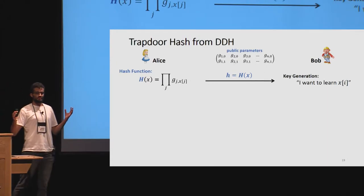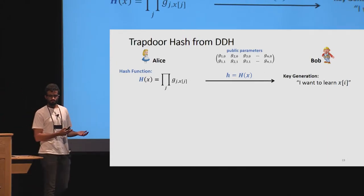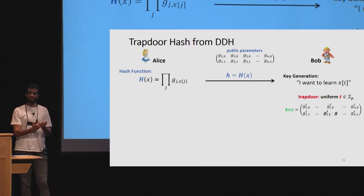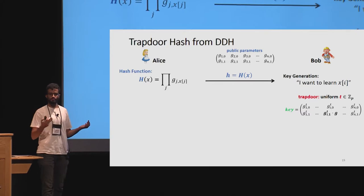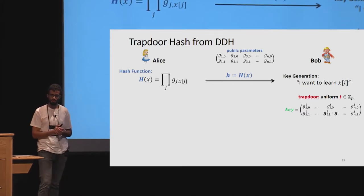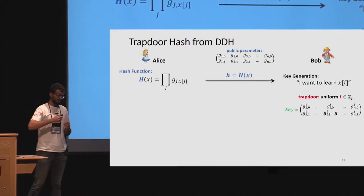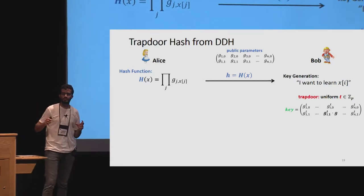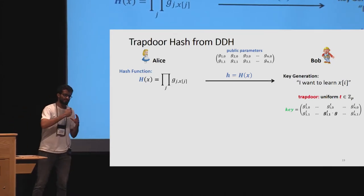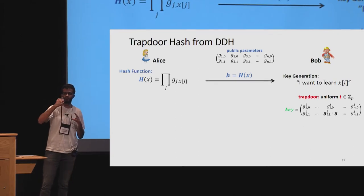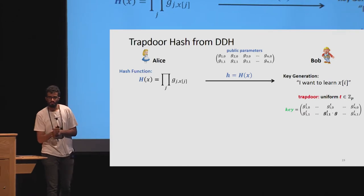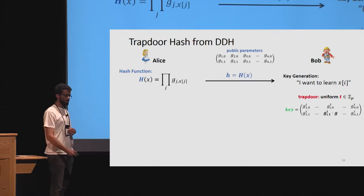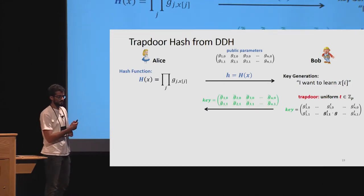Bob wants to learn the i-th bit of the database. He generates a trapdoor-key pair: the trapdoor is a uniform integer t in Z_p. He generates the key by taking the public parameter matrix, raising every group element to the power t, then going to the bottom element of the i-th column and multiplying it by g. We denote these key elements as g-tildes. Under DDH, the g-tildes look like a uniform matrix even given the public parameters, hiding the value of index i from Alice.